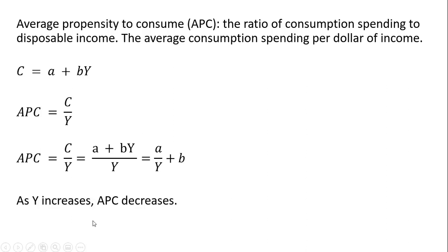One thing to note: as Y increases, the average propensity to consume decreases. As Y gets bigger, the A divided by Y term gets smaller, so the average propensity to consume decreases.